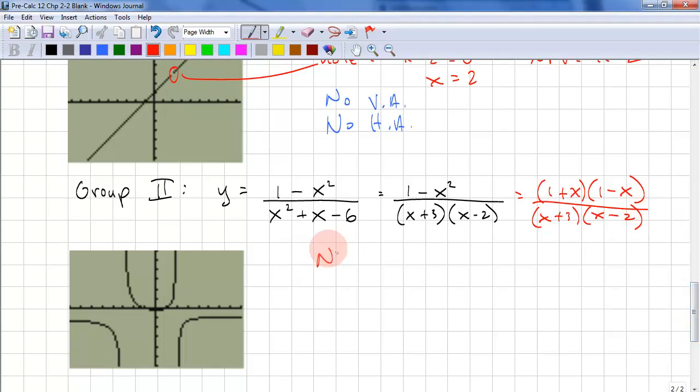We have NPVs: x equals negative 3, x equals 2. Where do we have vertical asymptotes? There and there. That corresponds to x equals negative 3, x equals 2. These happen to be our vertical asymptotes as well, the non-permissible values.